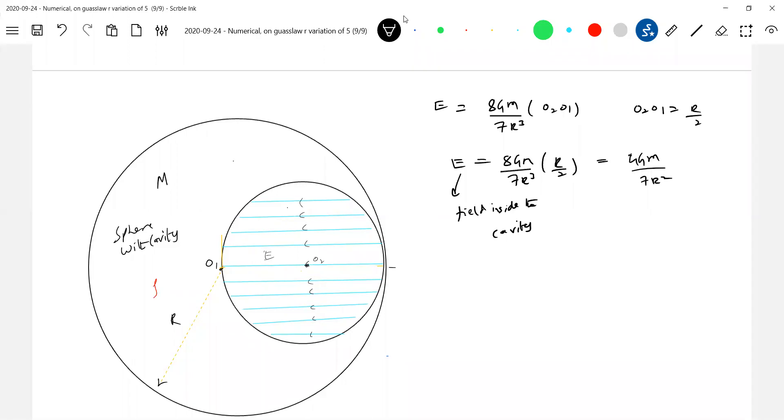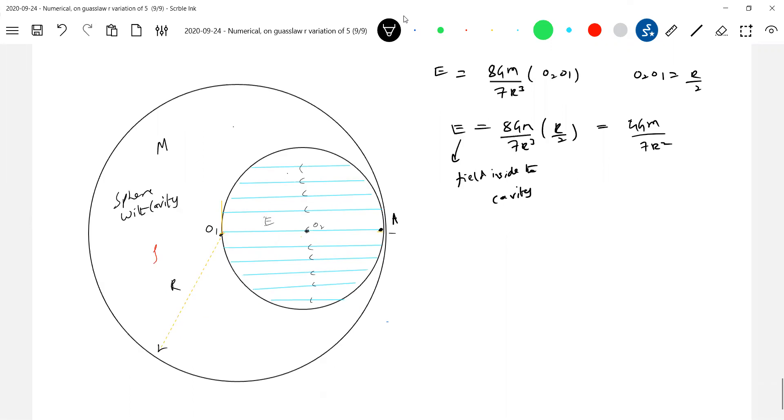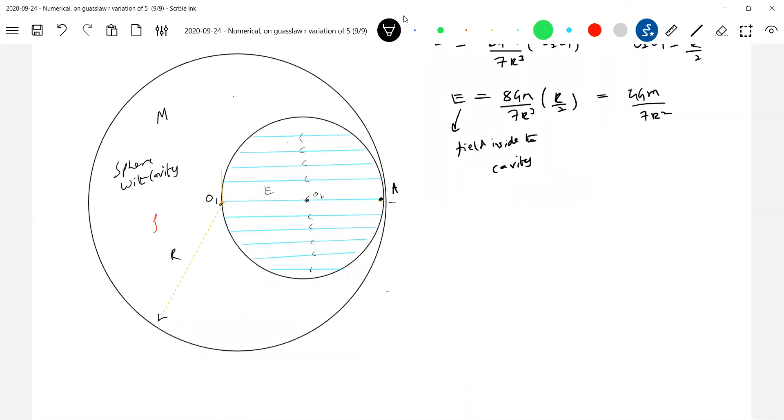What is the formula? 8GM by 7R cube by the distance O2O1, and O2O1 is equal to R by 2. Substitute this. 4GM by 7R square, this is the magnitude, this is the field inside the cavity. And there's one very good problem. Now I'll release a test mass somewhere here. What will happen to test mass? It will accelerate. So let me release a test mass at point A, then it will come and strike at O1. So I will ask you what is the speed of the test mass when released at point A? If a test mass m0 is released at point A, find the speed with which it strikes the point O1.